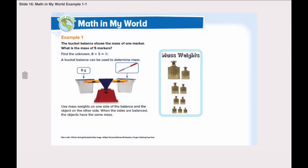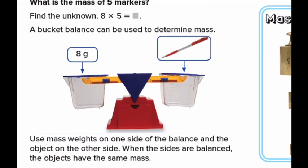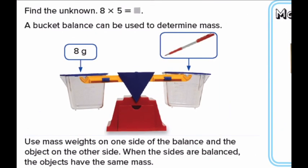Open page 651 and let's go through example number 1 together. The bucket balance shows the mass of one marker. What is the mass of 5 markers? Let's take a look first at the bucket balance we have here. It's the same like I showed you yesterday in the video. We place the weight on one side and the objects on the other side. This marker shows that it weighs 8 grams.